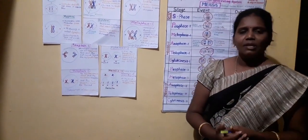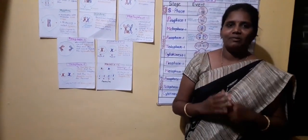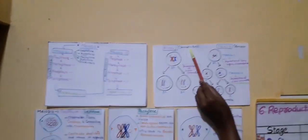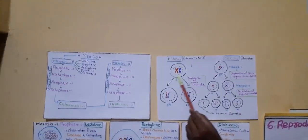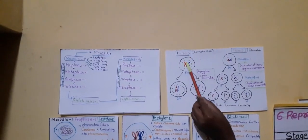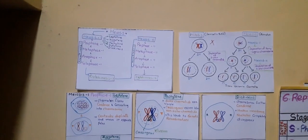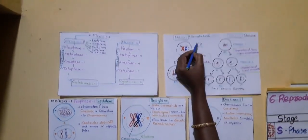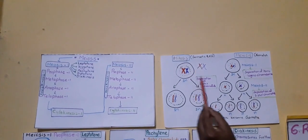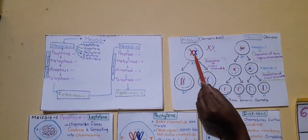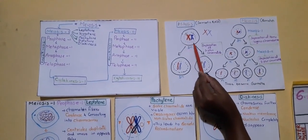Let us see the major difference between mitosis and meiosis. Mitosis takes place in somatic body cells. Imagine it is a parent cell. First, chromosomes pair up themselves and form homologous chromosomes. Here, a red colored chromosome and a blue colored chromosome are arranged in pairs. Chromosomes arranged in pairs are called homologous chromosomes, and we call it a diploid cell because there are two sets of chromosomes — one red and one blue.